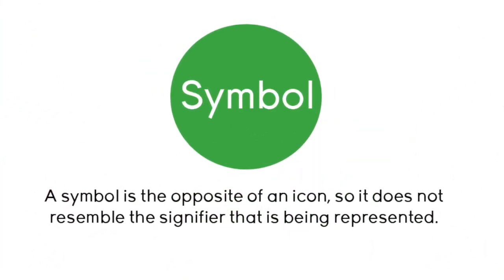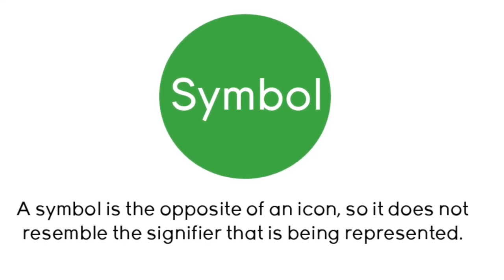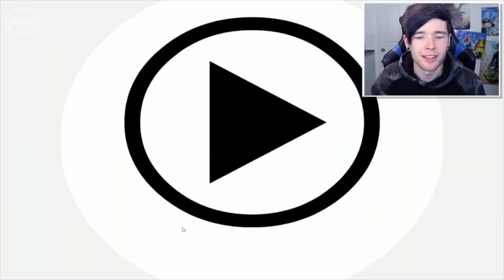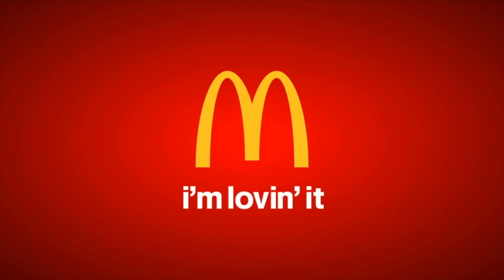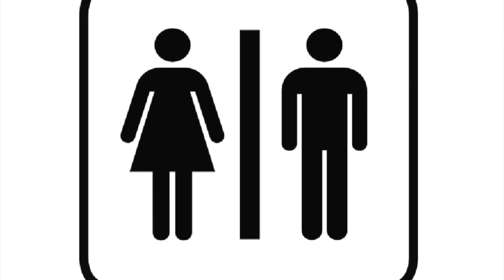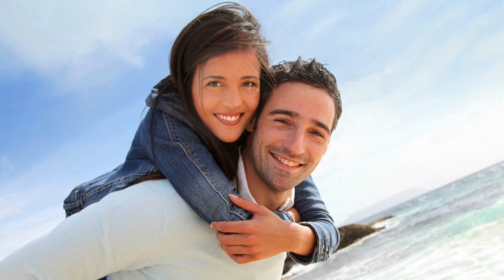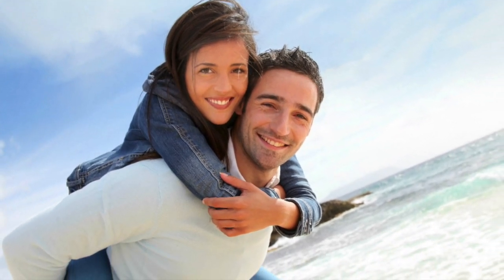A symbol is the opposite of an icon, so it does not resemble the signified that is being represented. Symbols are learned culturally, which explains why cultures can develop different and unique traits. We learn what symbols mean over time. A common example of a symbol is the male and female icons representing the presence of toilet facilities. Let's imagine we had never seen humans before, and were told that this is what a woman and a man look like — we probably wouldn't infer that this woman and man were in fact the same species.